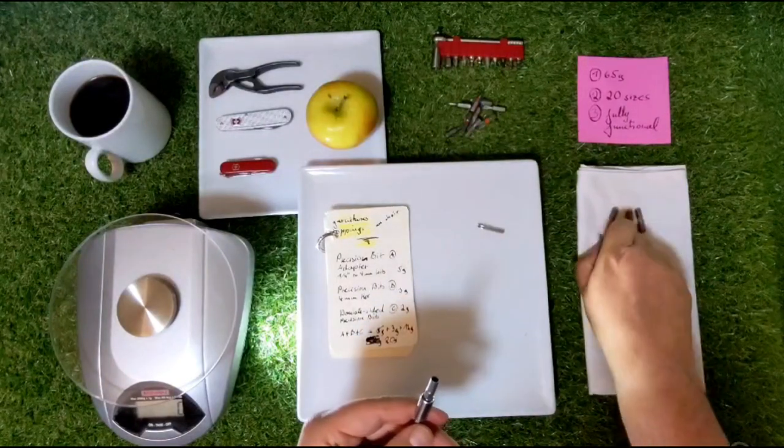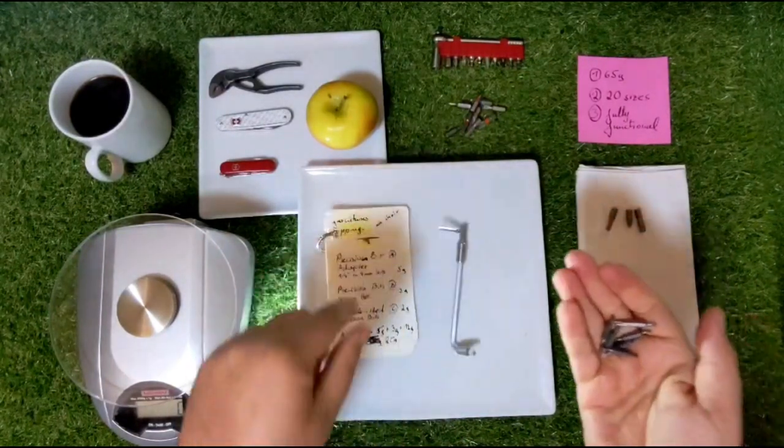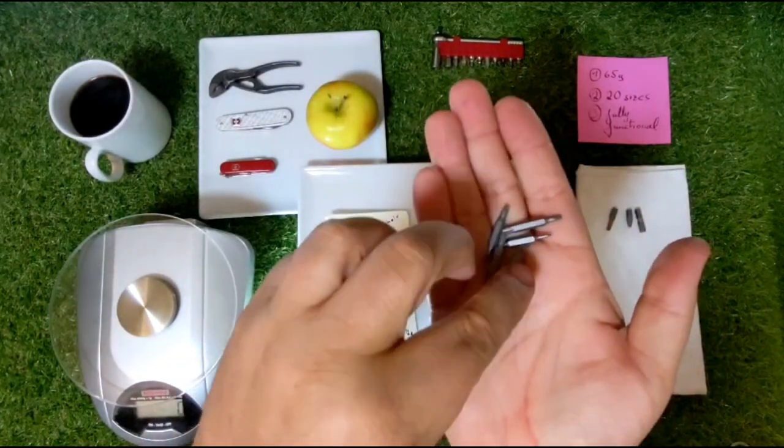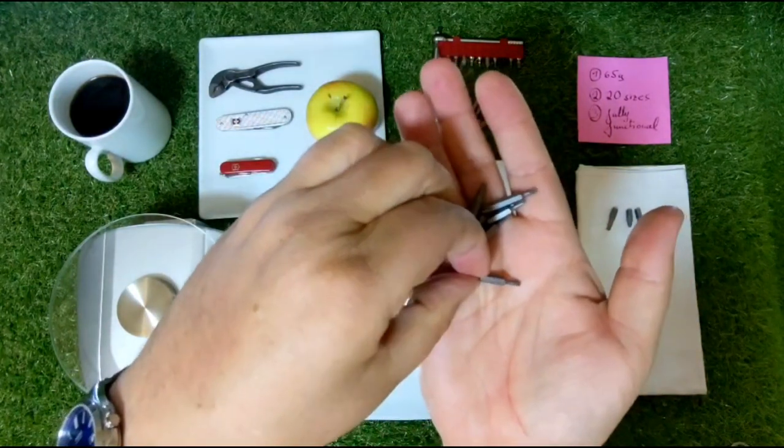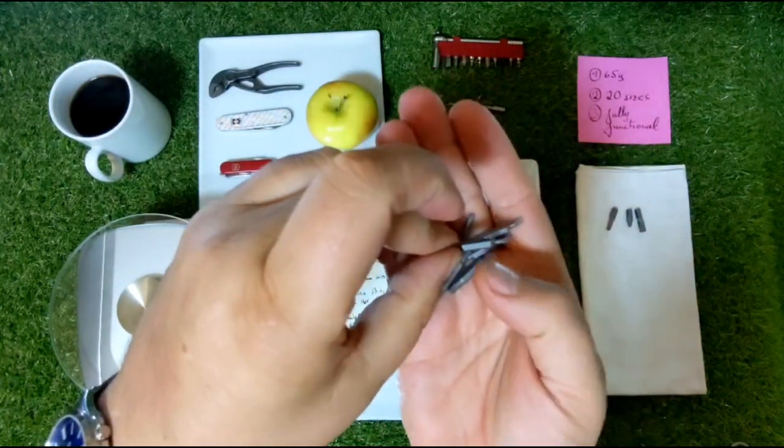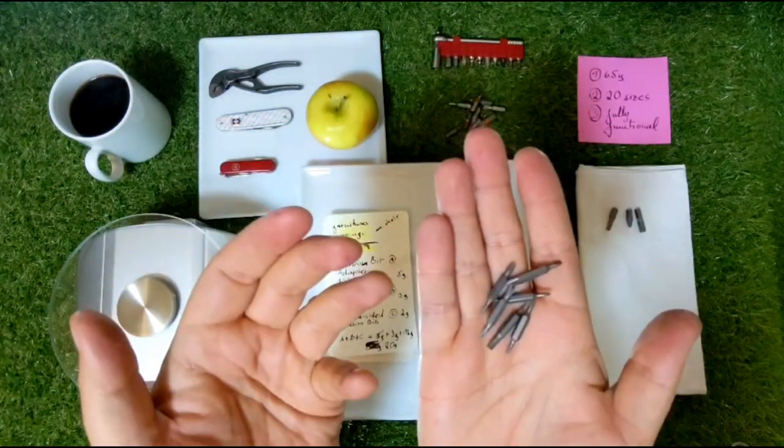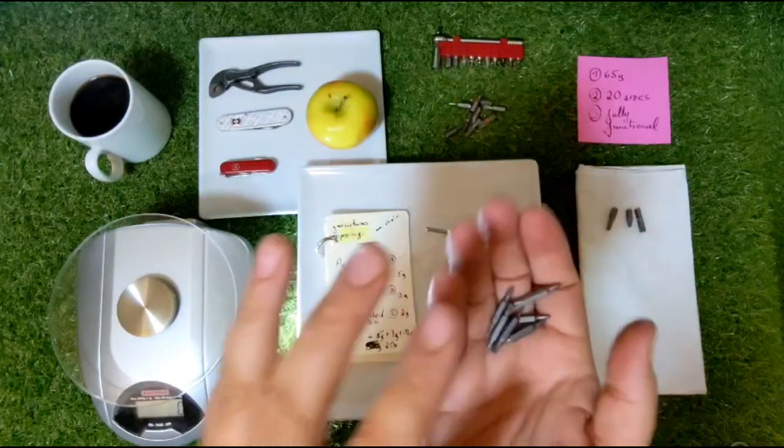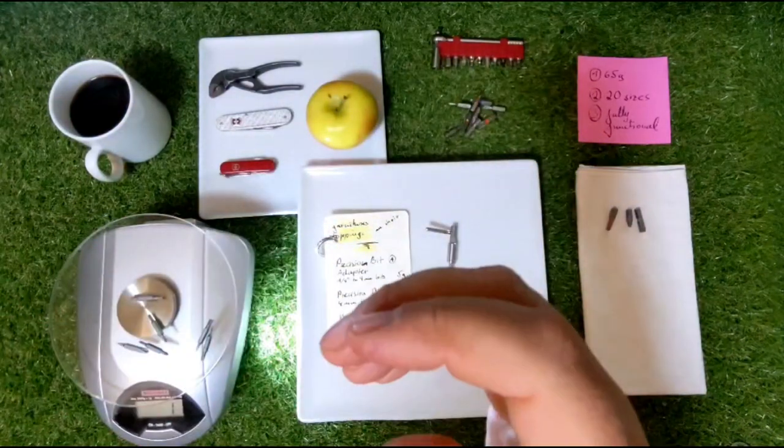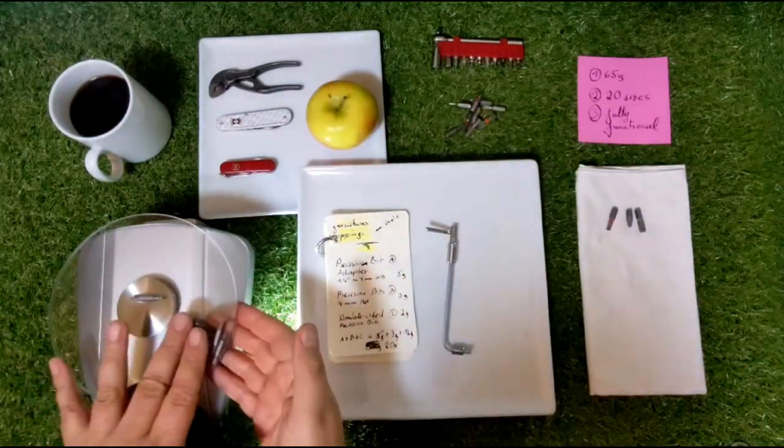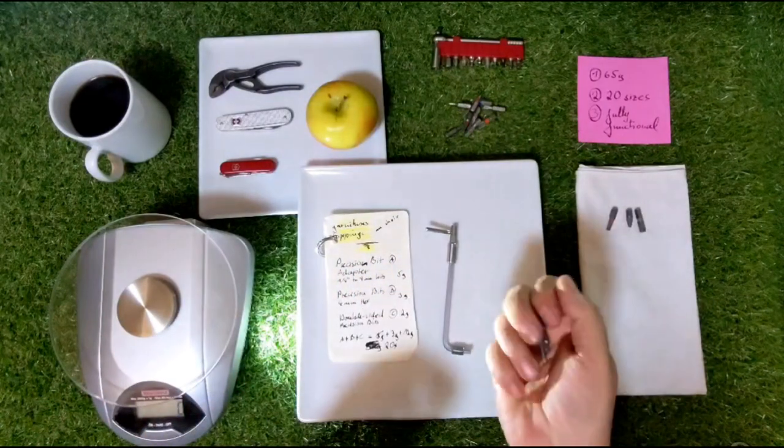Now we get to the core part of the whole system, which are the double-sided precision bits. They're nicely spelled out here on each. Here we go. Those are the ones I need. They're six, so I have 12 sizes, and they weigh about 2 grams each. I just put everything on it, so yeah, 11 grams—a little bit less than 2 grams on average.